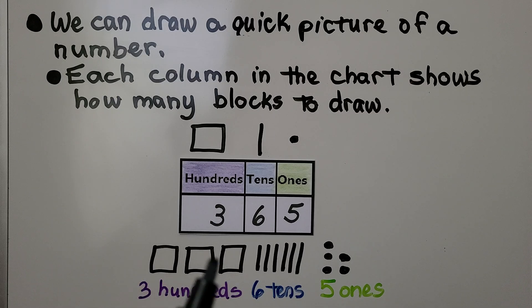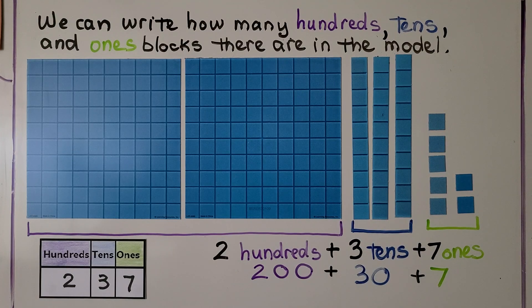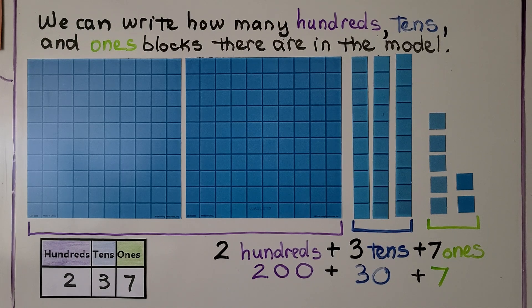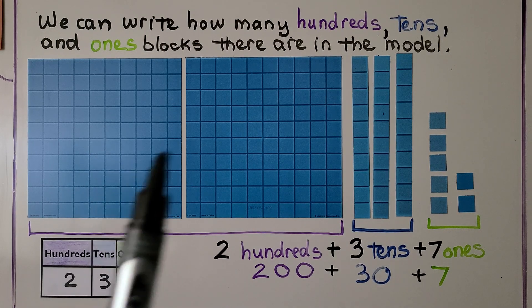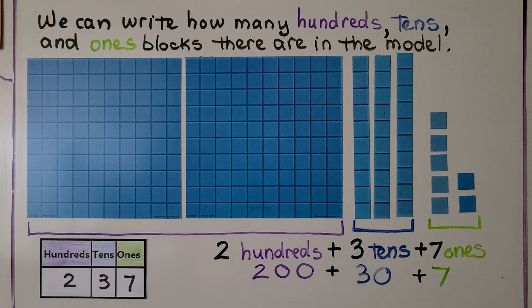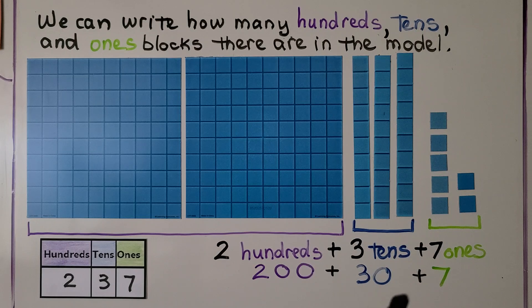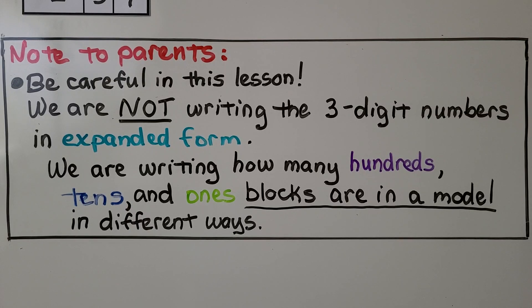It's telling us we need three hundreds, so we make three squares. We need six tens, so we make six lines. We need five ones, so we make five dots — we have 365 as a model. We can also write how many hundreds, tens, and ones blocks are in a model. We see two hundreds, three tens, and seven ones — that's the same as 200 plus 30 plus 7.